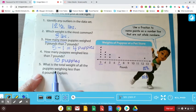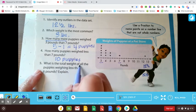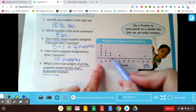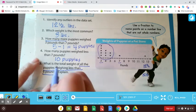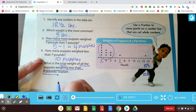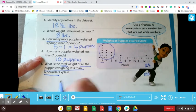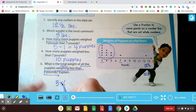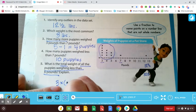And my last question is, what is the total weight of all of the puppies weighing less than six pounds? So less than six would be all of these guys right here, and they want the total weight. Okay, so I could solve this by using my properties. Let's see. There's three pounds times one, two, three, four, five, right?